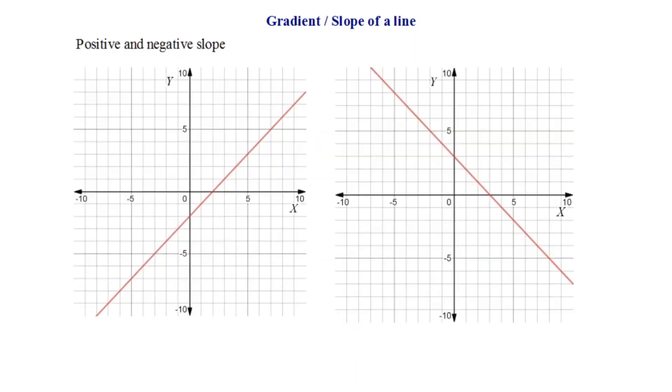Next we will go in more depth about the slope of a line. As you can see I have two graphs in front of me. Let's find the slope of each line one by one. Let's take a look at the first line. In order to find the slope or gradient I need two points on the line.